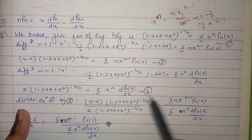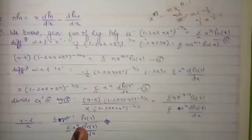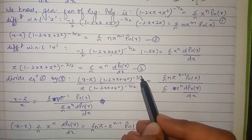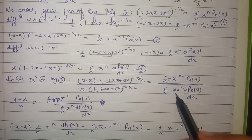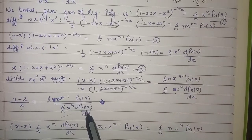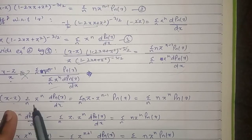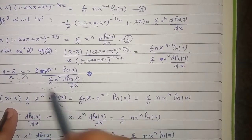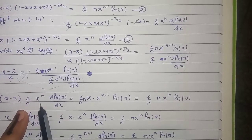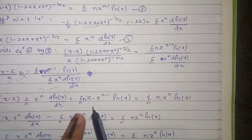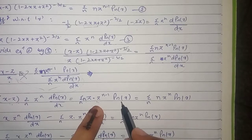Now we divide equation 2 by equation 3. The factor (1 - 2xz + z²)^(-3/2) cancels, leaving (x - z)/z on the left-hand side. Cross-multiplying, (x - z) multiplies Σ z^n · P'n(x) and z multiplies Σ n·z^(n-1)·Pn(x).